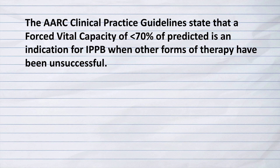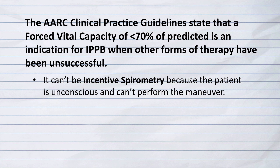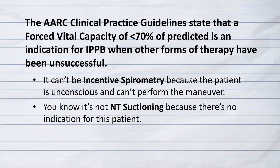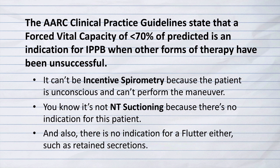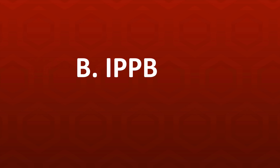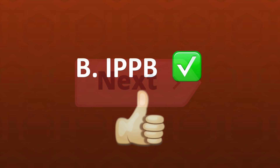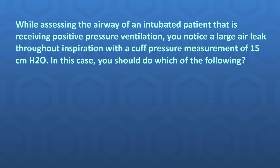The key to getting this one correct is the word 'unconscious.' The AARC clinical practice guidelines state that a forced vital capacity of less than 70% of predicted is an indication for IPPB when other forms of therapy have been unsuccessful. It can't be incentive spirometry because the patient is unconscious and can't perform the maneuver. It's not nasal tracheal suctioning or flutter because there is no indication for those. By using the process of elimination, the correct answer has to be B — IPPB.